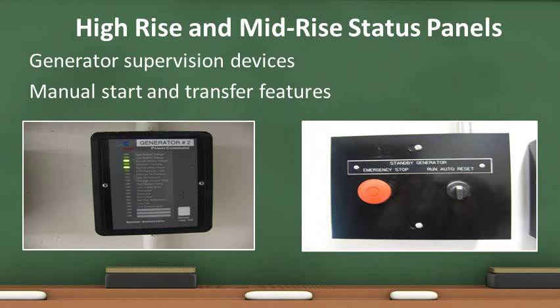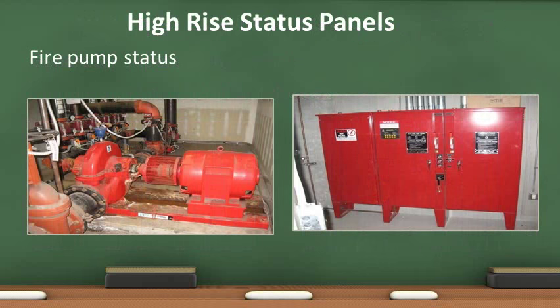A generator status panel will also be located in the fire control room, indicating operation of the backup emergency generator or indicating a problem. The fire pump and fire pump panel are also located here — any issues with the fire pump will be relayed electronically to the fire control room. A sign stating 'Fire Pump Room' is required on the door. Look for leaks on and around the fire pump and its associated piping. Each control valve shall be labeled to indicate what it controls, and check the indicator lights on the fire pump panel for issues.